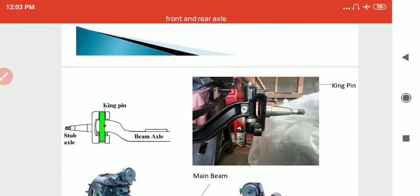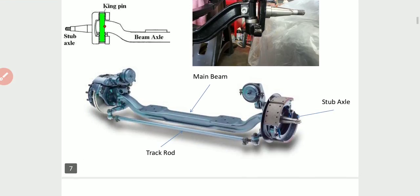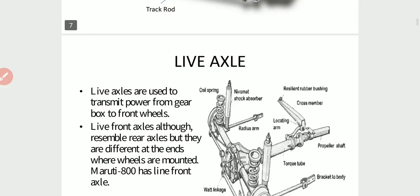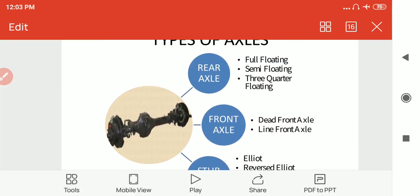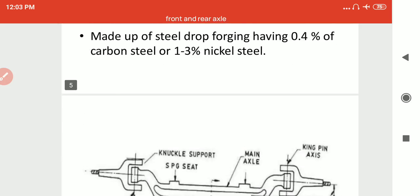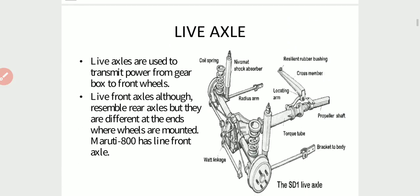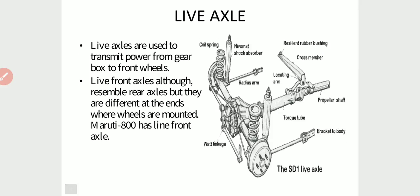On the left side and right side are the stub axles. Live axles are used to transmit power from the gearbox to the front wheels. Live front axles resemble rear axles but differ at the ends where the wheels are mounted. Maruti 800 has a live front axle. This is the diagram of the live front axle.